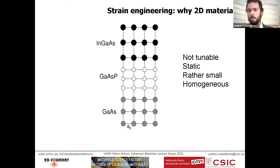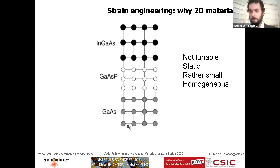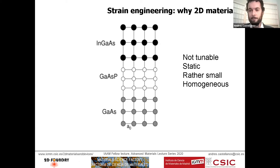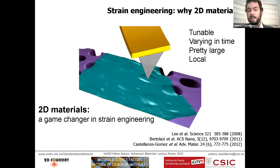Static strain cannot be used as a tuning knob, which is what we want for straintronic applications. Additionally, these crystalline three-dimensional materials are typically brittle, meaning the amount of deformation you can apply is relatively small. You also cannot easily apply localized strains to the sample — this kind of straining approach usually produces only uniform, homogeneous strain across the entire wafer.